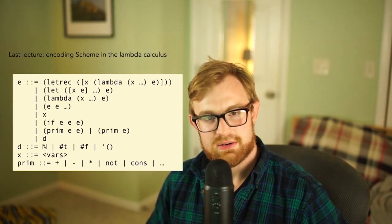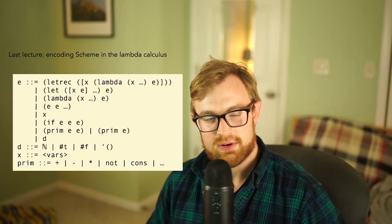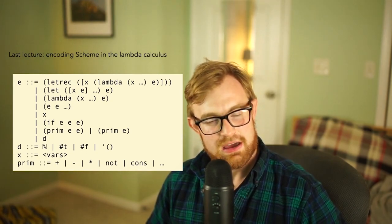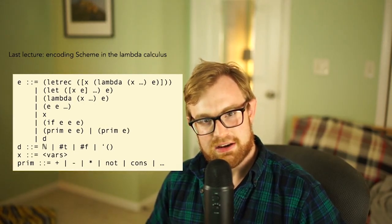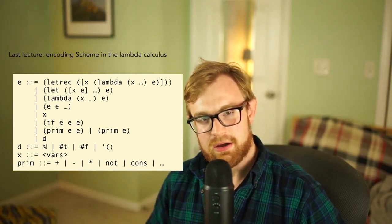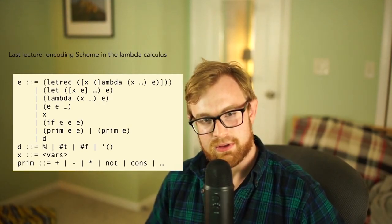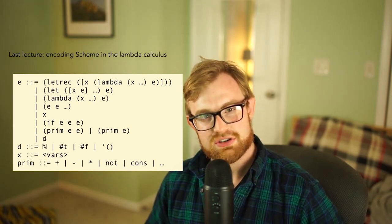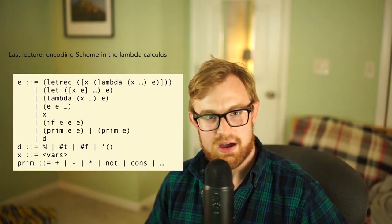In the last lecture, we talked about how to encode most of Scheme in the lambda calculus. However, there was one form that I left out: letrec. That's the thing that allows us to construct recursive loops. Tonight we're going to talk about how to actually encode letrec. It turns out it's actually dead simple if you know what to do, but the construction is not so obvious.